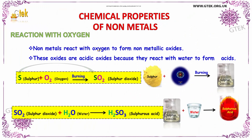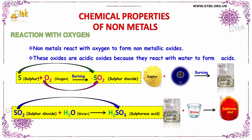Now let us see the chemical property of a non-metal. The reaction is with oxygen. Here we have taken sulfur as a non-metal. Sulfur on reaction with oxygen forms non-metallic oxides. SO2, that is sulfur dioxide, is the non-metallic oxide.